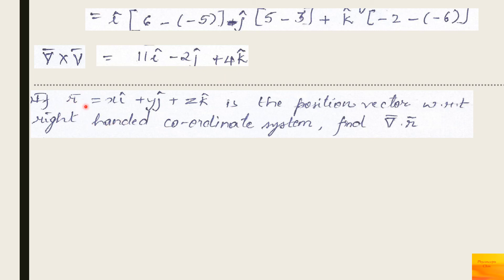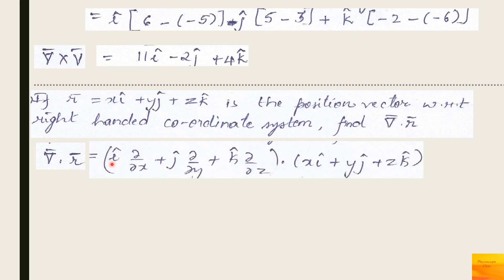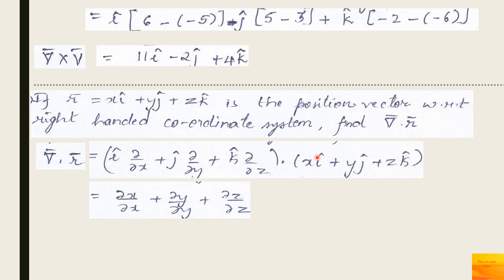Finally, r̄ = xî + yĵ + zk̂ is a position vector with respect to a right-handed coordinate system. Find ∇·r̄. Taking the dot product of the del operator with r̄: î·î = 1 so we get ∂x/∂x; plus ∂y/∂y; plus ∂z/∂z. Each equals 1, so the answer is 1 + 1 + 1 = 3.